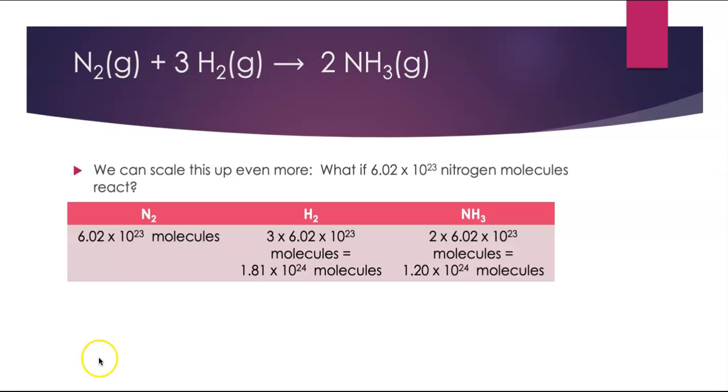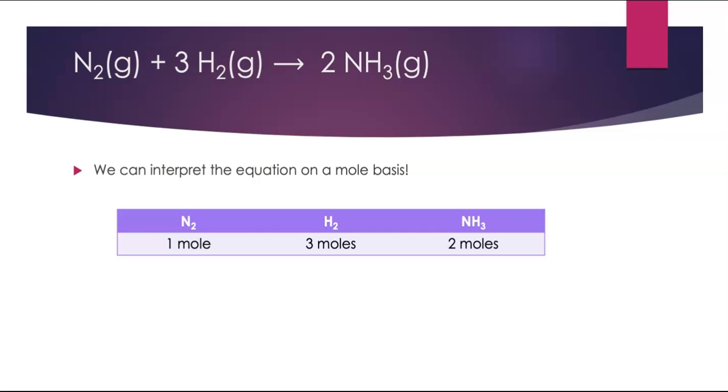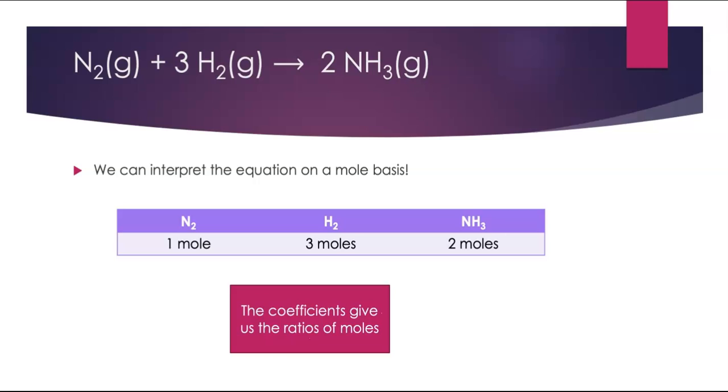Now, you might have guessed that I chose this number deliberately. It's Avogadro's number. So if I have Avogadro's number worth of nitrogen molecules, that's a mole of nitrogen molecules. And I can interpret the equation on a mole basis. One mole of nitrogen molecules reacts with three moles of hydrogen molecules, which then goes on to form two moles of ammonia. And again, the coefficients from the balanced equation give us the ratio of moles. They gave us ratios of molecules, and now we can interpret them as ratios of moles. Whatever makes more sense for the problem that we're doing.